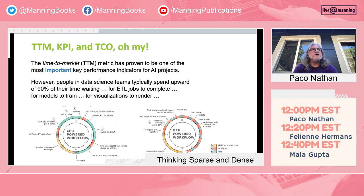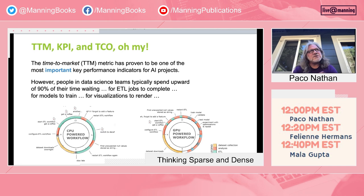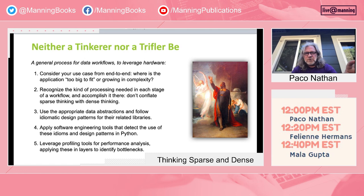As you're making trade-offs and doing software engineering work, you need to understand how to measure. Time to market has become one of the most important metrics for success or failure of AI projects. Yet working on data science teams, you see people spend so much of their time waiting — waiting for ETL jobs to complete, for models to train, for visualizations to render. With appropriate use of hardware, you can cut out those wait states, and that leads to more success at the project level. Here's our five-step program, described in more detail in the report.